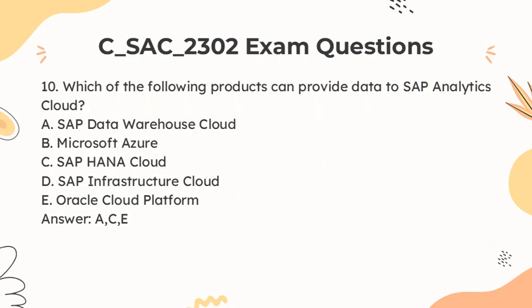Question 10. Which of the following products can provide data to SAP Analytics Cloud? A. SAP Data Warehouse Cloud. B. Microsoft Azure. C. SAP HANA Cloud. D. SAP Infrastructure Cloud. E. Oracle Cloud Platform. Answer: A, C, E.